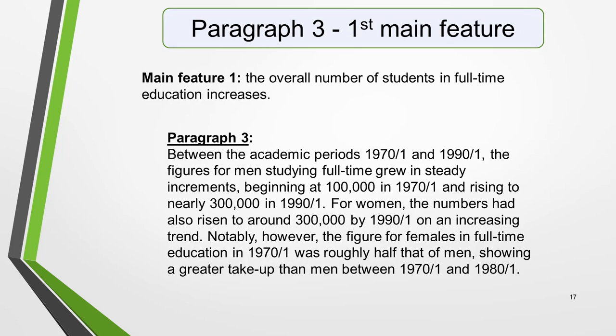Paragraphs 3 and 4 are where you include more detailed information about the data in the graph. In paragraph 3, you should give evidence to support your first main feature. In this instance, the data will be numbers of students in their respective time periods. In other graphics it might be percentages, ages, monetary value or some other unit of measurement. Don't forget to make comparisons when relevant.